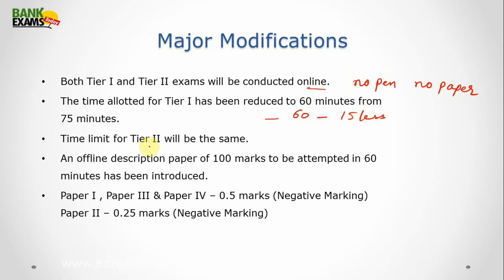Time limit for tier 2 exam will be the same as the previous exam pattern. An offline descriptive paper of 100 marks to be attempted in 60 minutes has been introduced to check the writing abilities of the students or the candidates. Also, the SSC has introduced 0.5 negative marking for each incorrect answer and 0.25 marks for paper 2. So these are the major modifications that have been included in the new exam pattern.